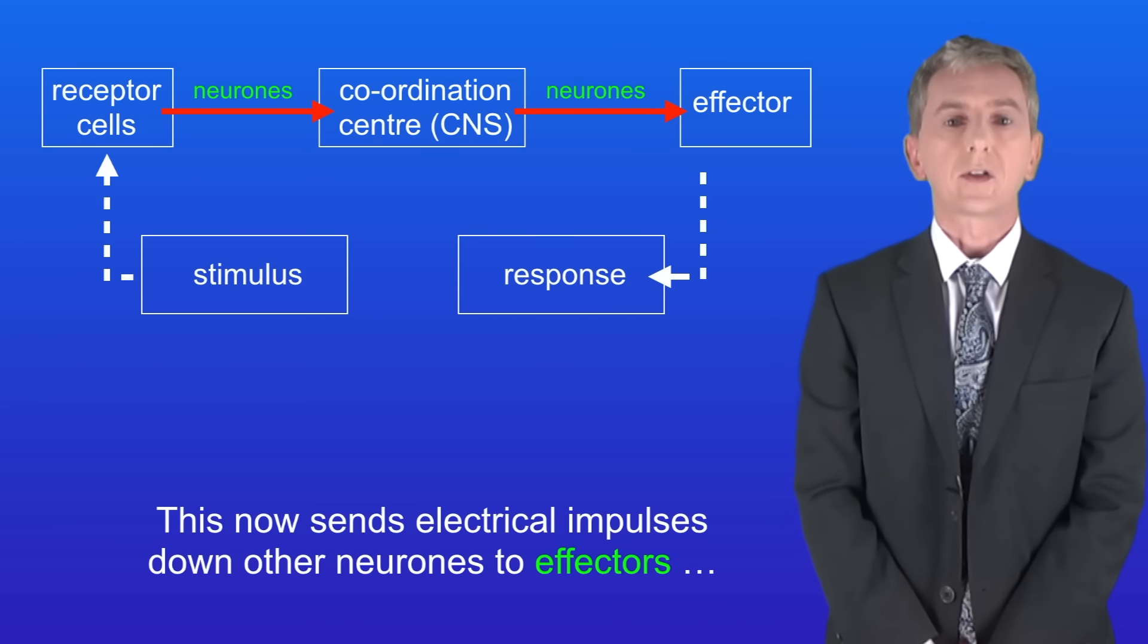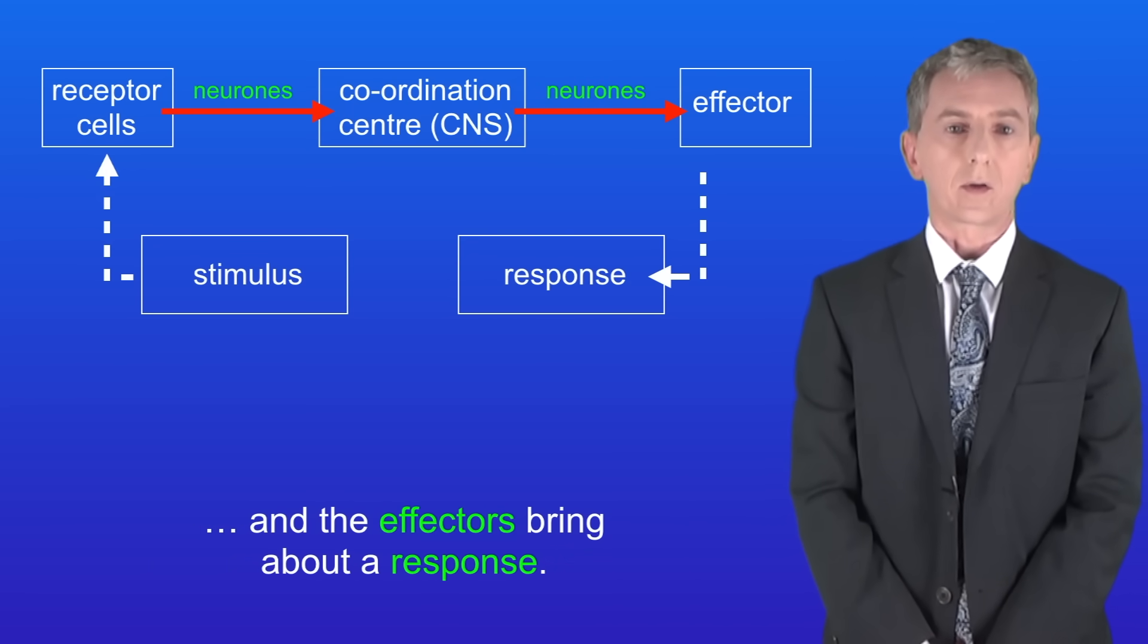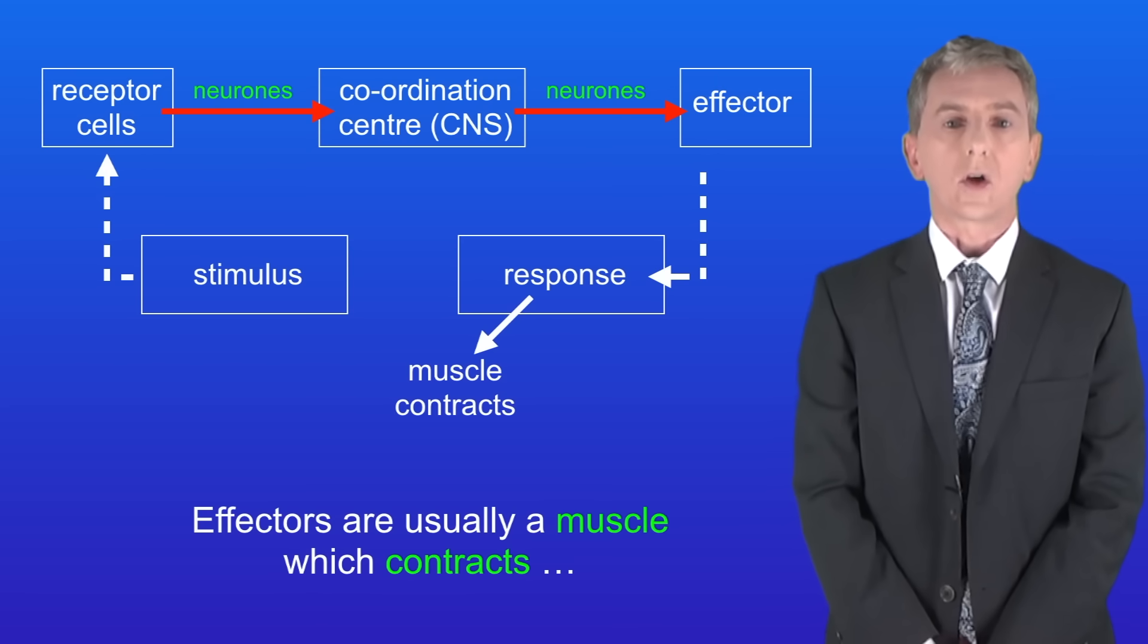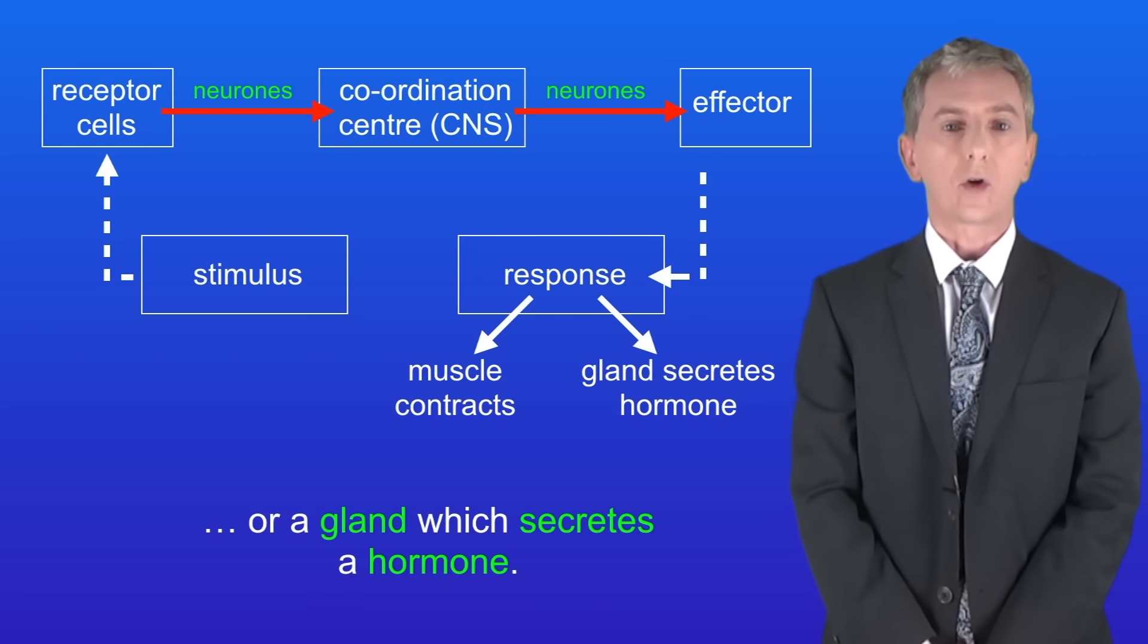This now sends electrical impulses down other neurons to effectors and the effectors bring about a response. Effectors are usually a muscle which contracts or a gland which secretes a hormone.